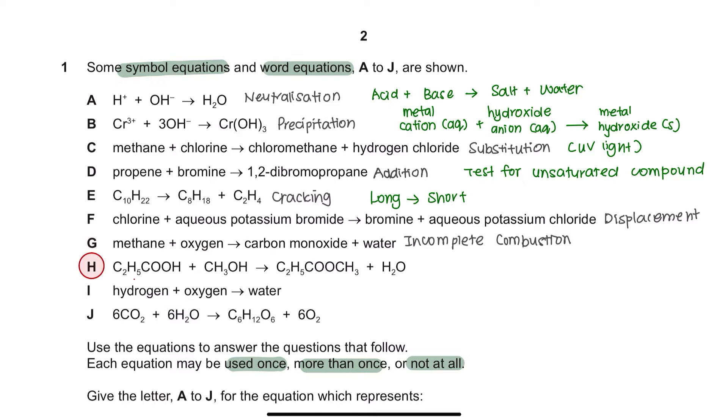Equation H. We have a carboxylic acid reacting with alcohol to form ester and water. This process is referred to as esterification.